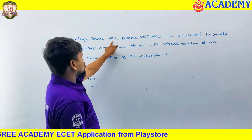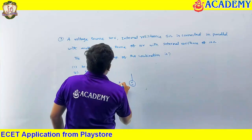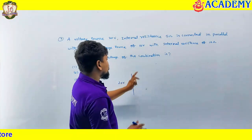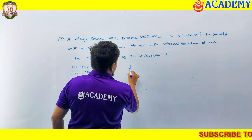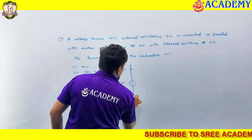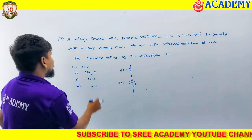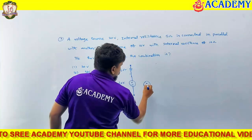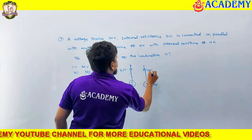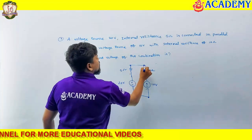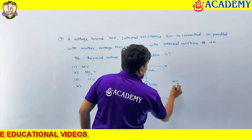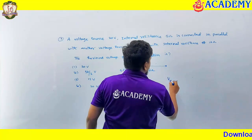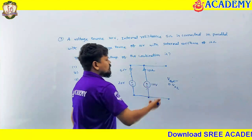What they have given: a voltage source of 20 volts — where is the internal resistance? For any voltage source, its internal resistance is always connected in series. So this is 5 ohms in series. Another voltage source of 10 volt with internal resistance of 10 ohms is connected in parallel. We are asking what is the equivalent open circuit voltage between these two terminals — that is nothing but the Thevenin's voltage.